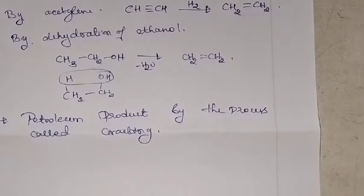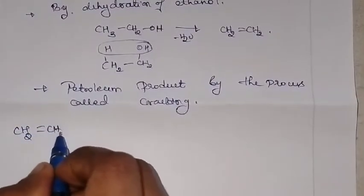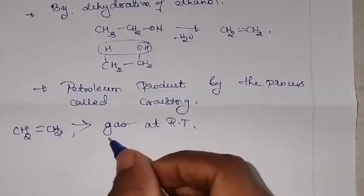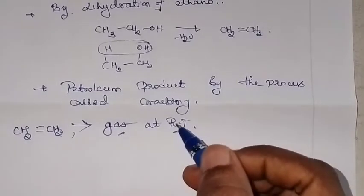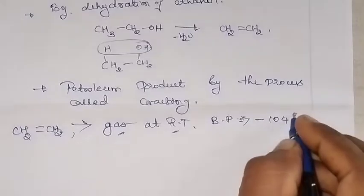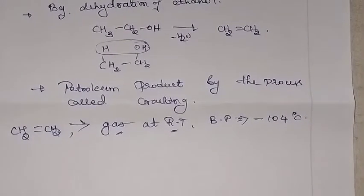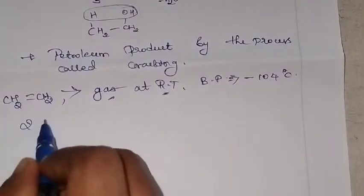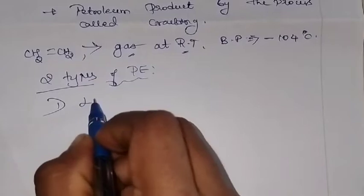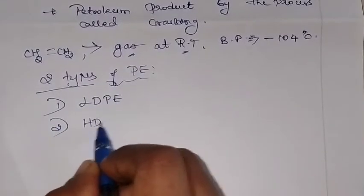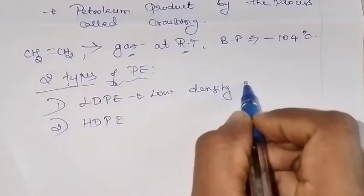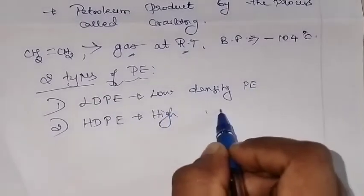Ethylene, CH₂=CH₂, is a gas at room temperature — at normal temperature it is in the gaseous state. Its boiling point is negative 104 degree Celsius. Now there are two types of polyethylene: one is LDPE (low density polyethylene) and the second one is HDPE (high density polyethylene). These are the two varieties under polyethylene.